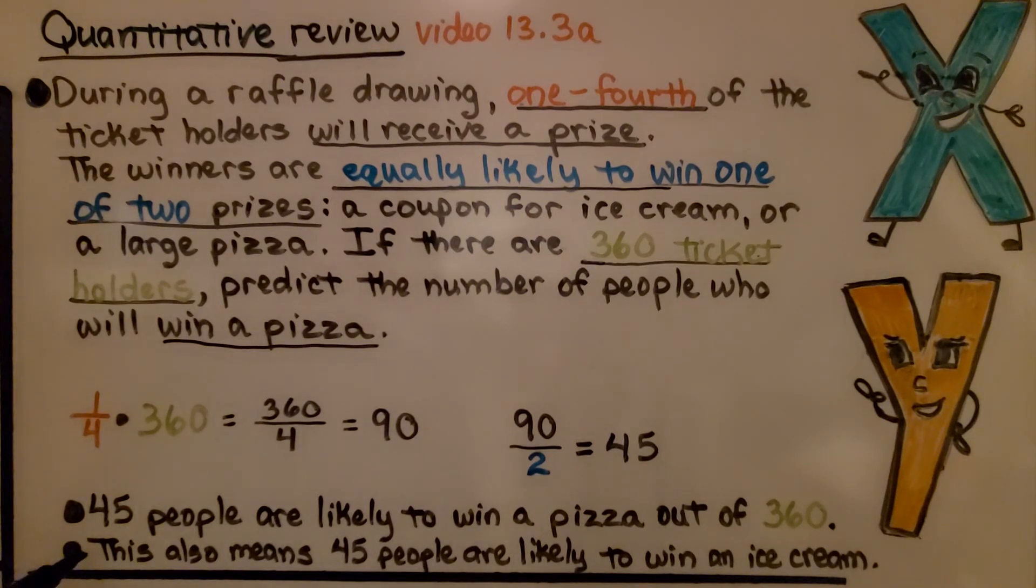But this also means, because we divided it by two, that 45 people are likely to win an ice cream.